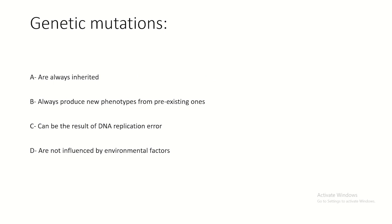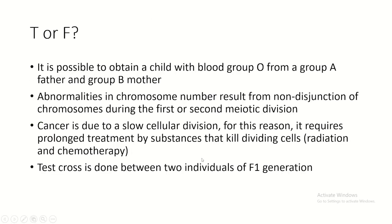Genetic mutations are not always inherited - somatic mutations are not. They can produce new phenotypes from pre-existing ones. Some mutations are silent. They can result from DNA replication errors - for example, a missed or replaced nucleotide causing substitution. They are influenced by environmental factors.